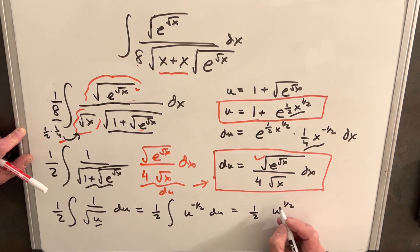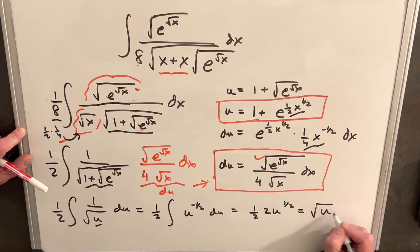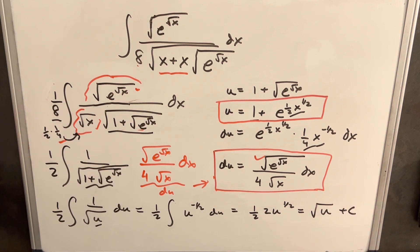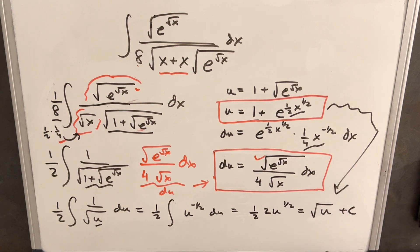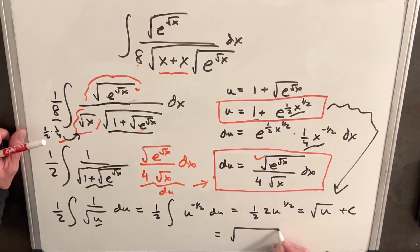This is going to be u 1 half, but multiply out a 2, and we're left with just the square root of u plus c. All we need to do is back substitute, and we're going to have our final answer, which is going to be the square root of 1 plus square root of e square root of x plus c, and we're done.